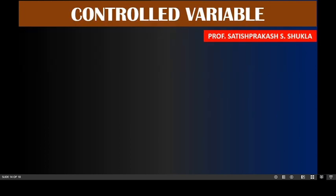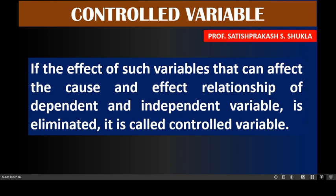Now we see the meaning of controlled variable. If the effect of variables that can affect the cause and effect relationship of dependent and independent variables is eliminated, it is called a controlled variable. If moderator variables are not controlled, the results of the research will differ from the correct result. So, to eliminate the effect of the moderator variable, the researcher tends to control it, and when controlled, it becomes the controlled variable.